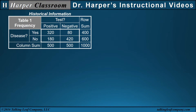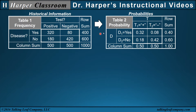Let's start with historical information, where we have 1,000 subjects that were given a test to test for a disease. The test has two outcomes, positive or negative. The subject could either have the disease or not have the disease. Out of 1,000 subjects, 400 had the disease and 600 did not, and 500 had a positive test and 500 had a negative test. Dividing by 1,000 gives us a probability table with values 0.32, 0.08, 0.18, and 0.42.